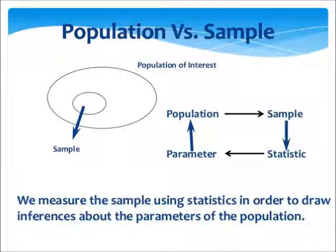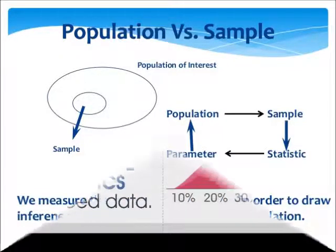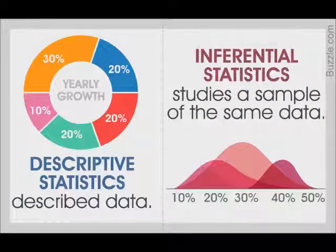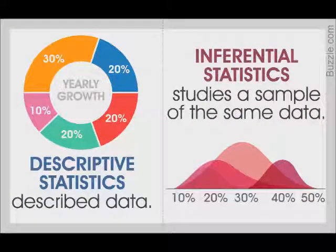A statistic is a numerical summary of a sample. Underneath statistics, you have two options, descriptive and inferential. A descriptive statistic consists of organizing and summarizing the data. Descriptive statistics describe data through numerical summaries, tables, and graphs.